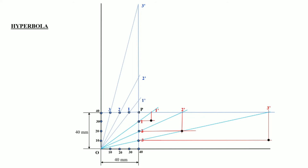The same construction is repeated on the left-hand side. From horizontal points 1, 2, 3 we draw vertical lines, and from points 1 dash, 2 dash, 3 dash we draw horizontal lines towards the left. Wherever these lines meet we get three more new points. This way we get the locus through which we can draw a smooth curve passing through all these points.